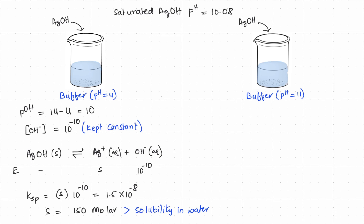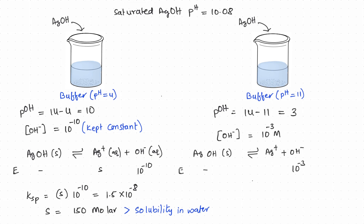Next, let us dissolve silver hydroxide in a buffer solution whose pH is 11, which is higher than the pH of the saturated solution of silver hydroxide, and then determine by how much the solubility is decreased. The pH of the buffer is 11; therefore the pOH is equal to 14 minus 11, which comes out to be 3. The concentration of hydroxide ions in the solution is 10 to the negative 3. By the same explanation as above, at equilibrium we will have 10 to the negative 3 molar OH⁻ ions and S molar Ag⁺ ions in the solution. Substituting the equilibrium concentrations into the Ksp expression and solving for S, we get the solubility of silver hydroxide is 1.5 times 10 to the minus 5 molar. The higher pH buffer decreased the solubility of silver hydroxide.